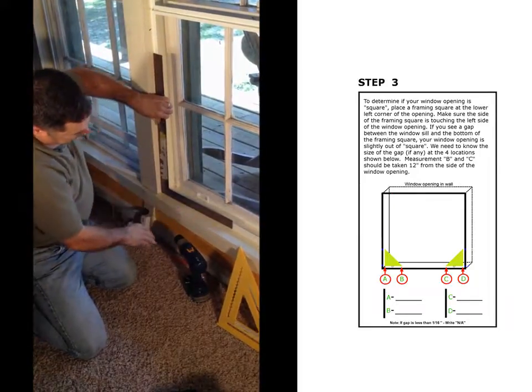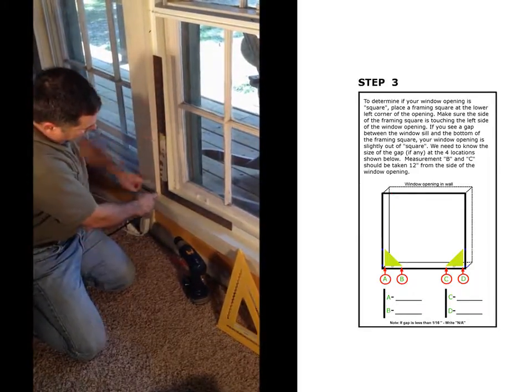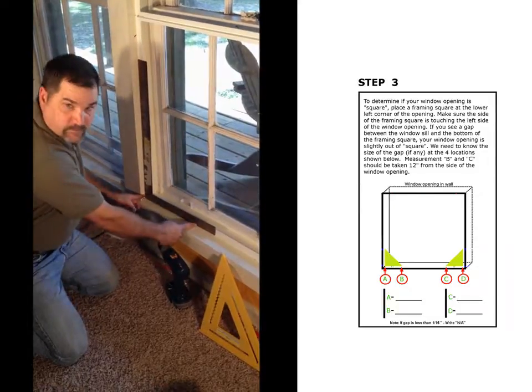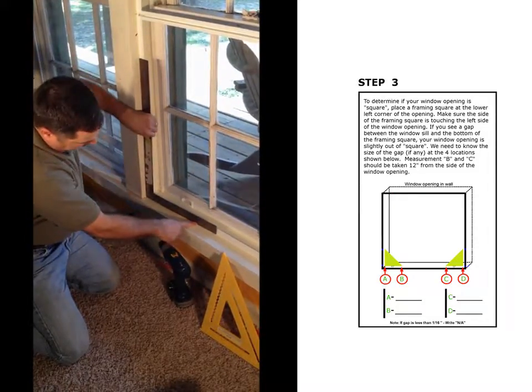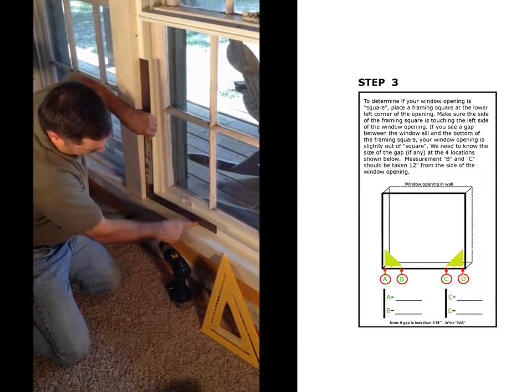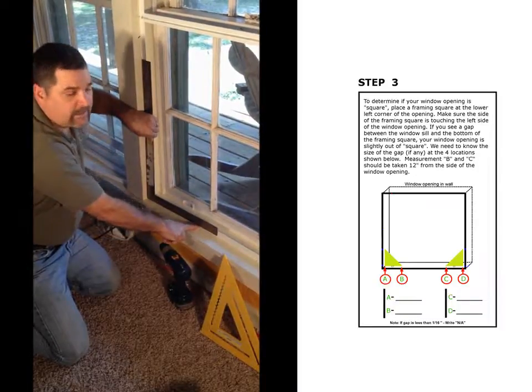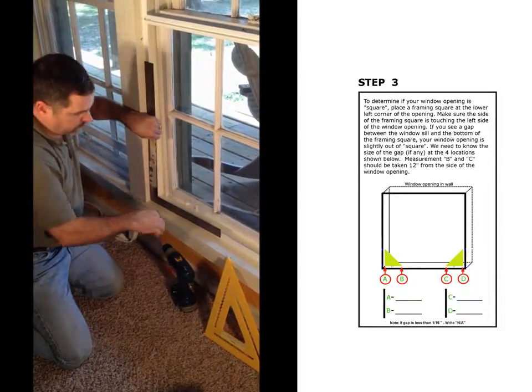If you put the square in there and there's a gap, you need to go 12 inches from the end and measure the distance between the bottom of the square and the window sill and write that number on your window measurement form.